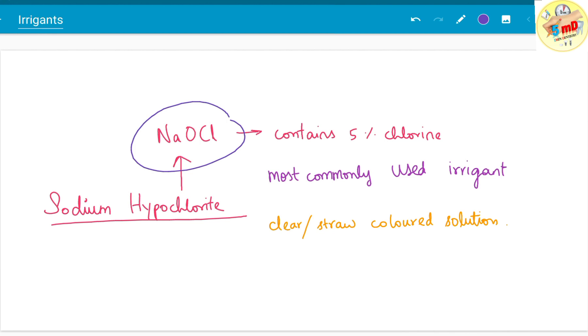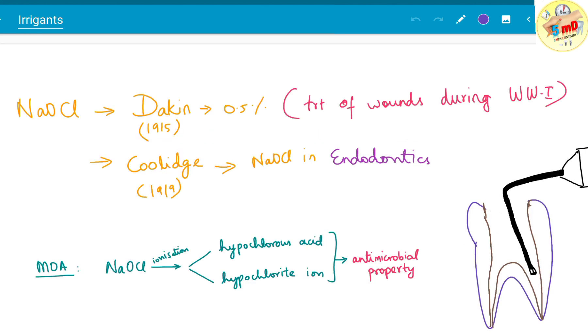In this video we will see about sodium hypochlorite and EDTA. Sodium hypochlorite contains 5% chlorine and is the most commonly used irrigant in endodontics. It is a clear, straw-colored solution. The main mechanism of action of sodium hypochlorite is ionization - hypochlorous acid and hypochlorite ion are formed, and these have antimicrobial properties.